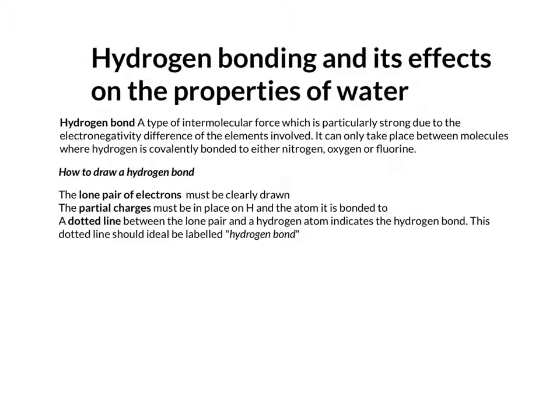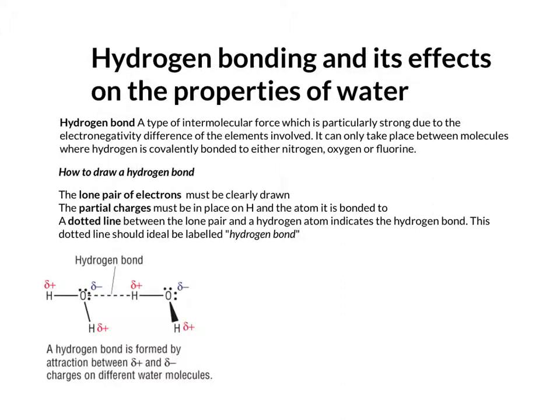When you're drawing a hydrogen bond in an exam question, you've got to do three things because it's normally a three-mark answer. The lone pair of electrons must be clearly drawn. The partial charges must be clearly drawn in place on the hydrogen and the atom it's bonded to. And a dotted line, ideally labelled hydrogen bond, should go between the lone pair and the hydrogen that the hydrogen bond is involved in.